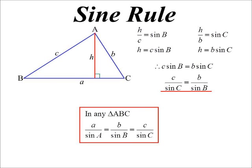And of course, had I chosen a different vertex to do the same thing with, I could show it's also equal to A over sine A.